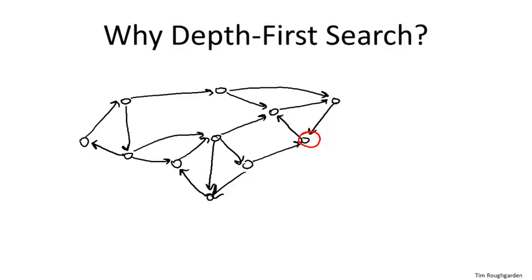Suppose we call depth-first search starting from a red node. What would it explore? The guarantee of DFS or BFS is that you find everything that's findable but nothing else. What's findable means you can reach it via a directed path from the starting node. From this red node, you can explore only a couple of arcs and go backward, so DFS will find precisely the nodes in that triangle. If we invoke DFS from any of the three nodes in this triangle, it's going to discover precisely this strongly connected component — exactly the three nodes in the circled SCC. Maybe if we do that over and over again, we'll get all the SCCs.